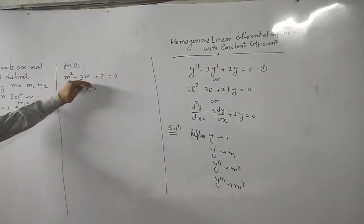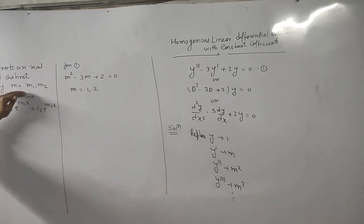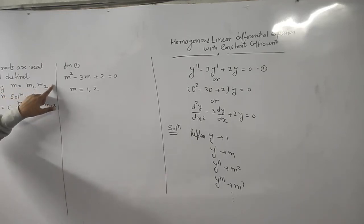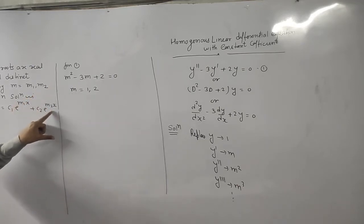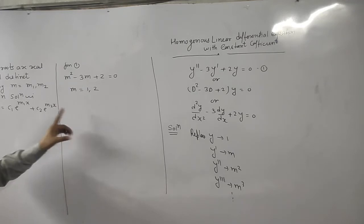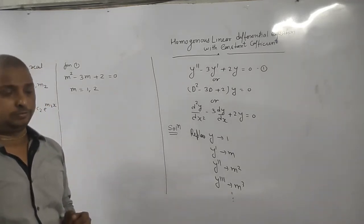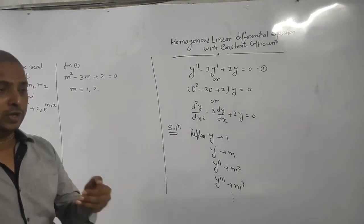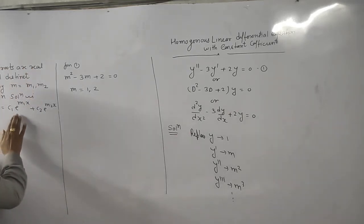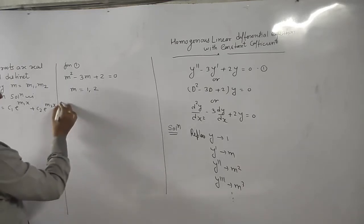Suppose we have a higher degree, then definitely we have more than two roots. Suppose here m3, which is also real and distinct. Then solution is plus c3 e to the power m3x and so on. So whenever roots are real and distinct, then its solution is in this form. Just your work is to put m1 and m2 values here.